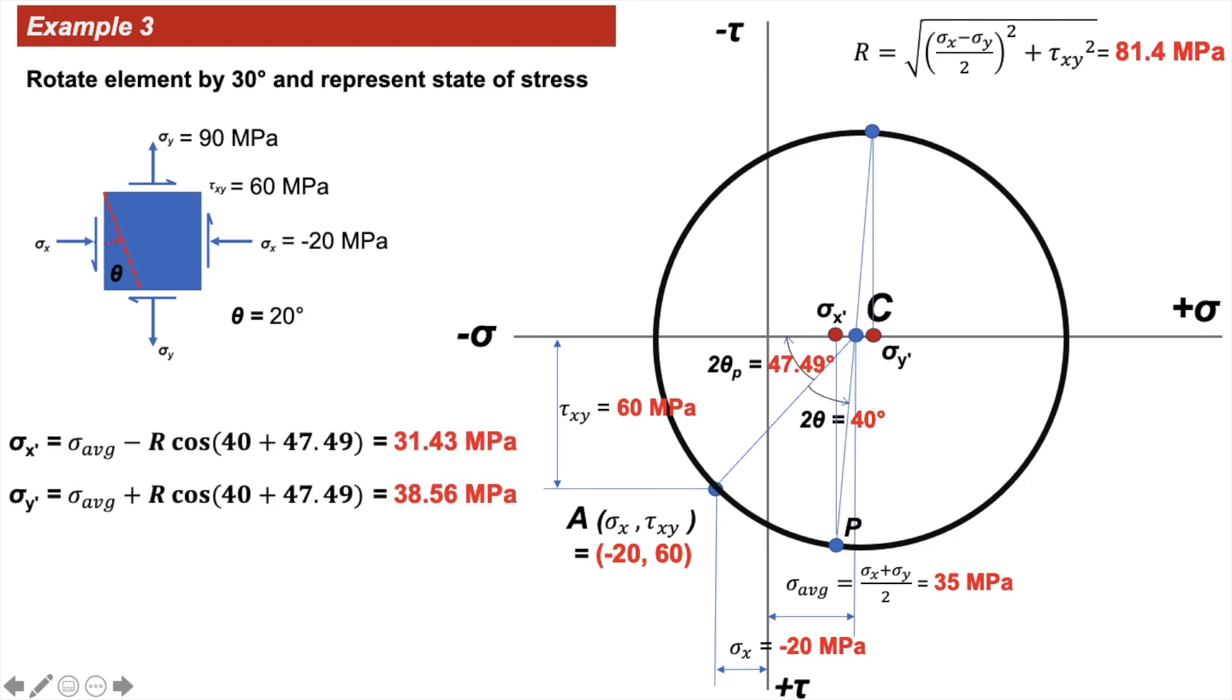Now it is basically trigonometry. σx' = σavg - R cos(40 + 47.49), which equals 31.43 MPa, and σy' = σavg + R cos(40 + 47.49°),